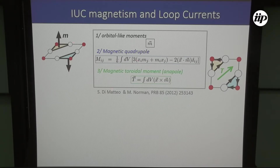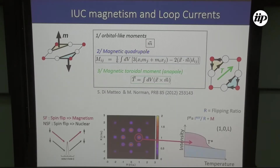You can also characterize this loop current phase by other parameters like magnetic quadrupole, magnetic toroidal moment, or anapole, which should be along the diagonal. As a neutron scatterer, I focus on the magnetic properties of this loop current phase. The magnetic moment produced here is very tiny and, since translation invariance is preserved, the magnetic peak will sit on top of the nuclear peak — three or four orders of magnitude smaller than the underlying nuclear peak. That's very challenging.